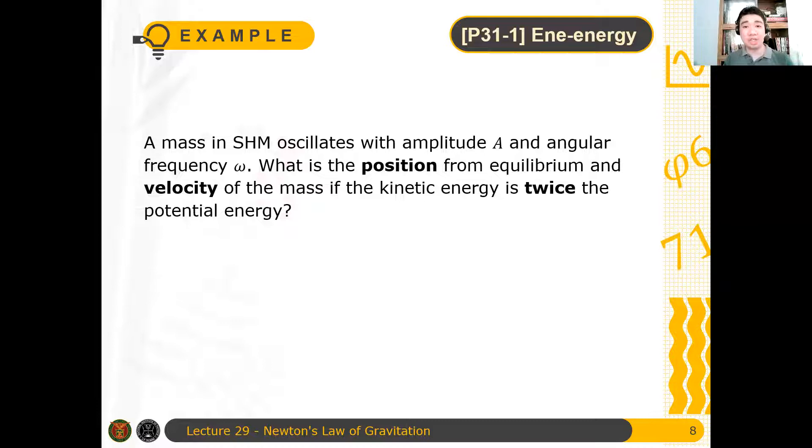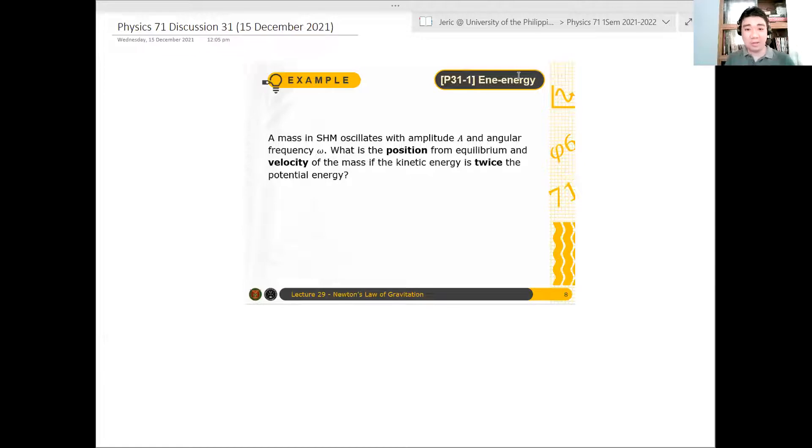So we will use the conservation of mechanical energy for simple harmonic motion in obtaining the position and the velocity of this particle. Okay, so what we just need is to find the total energy of the system. Remember, the total mechanical energy is just the kinetic energy plus the elastic potential energy. Okay, and also we know that this is equal to one half k A squared.